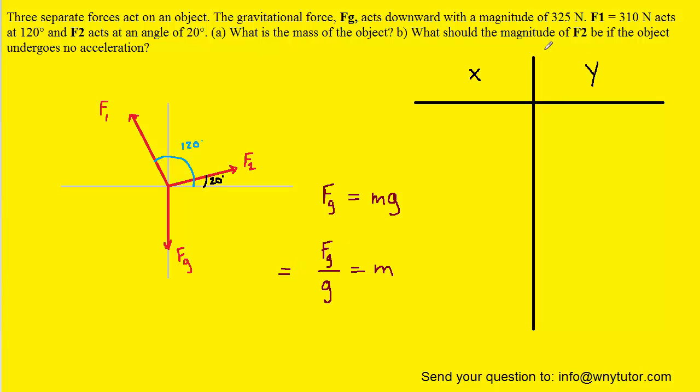The question gives us the gravitational force magnitude as 325 newtons, so we can plug that in. And then g has a value of 9.8 meters per second squared. So if we simply divide 325 by 9.8, we'll obtain the mass. And when we do that, we get about 33.2, and the standard unit of mass will be kilograms. So this is the correct answer to part A of the question.